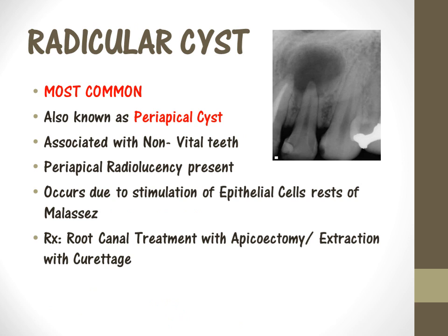The first cyst we are going to be discussing today would be radicular cysts. This is the most common type of odontogenic cyst seen in the oral cavity. This cyst is also known as periapical cysts. It is associated with a tooth which has caries involvement, and then there is pulpal infection which ultimately leads to periapical infection and forms periapical cysts. This cyst occurs when the infection from the pulp reacts with the remnants of Hertwig's epithelial root sheath in the periodontal ligament.